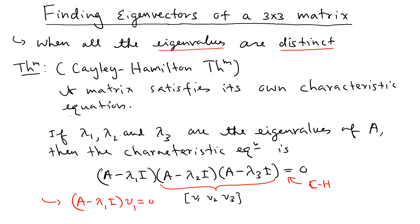This means v1 is an eigenvector. Similarly, v2 and v3 are eigenvectors — or zero. If they are non-zero, the non-zero columns are eigenvectors of lambda 1. So if you multiply two matrices, the columns are the eigenvectors of the remaining eigenvalue. Multiplying the first and third gives eigenvectors of lambda 2; multiplying first and second gives eigenvectors of lambda 3.